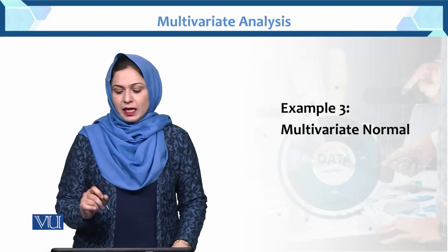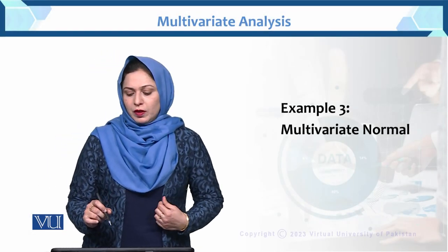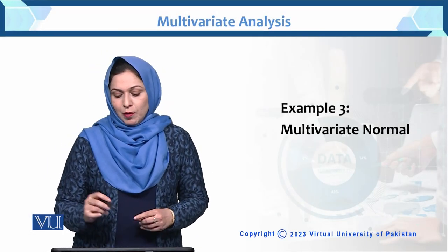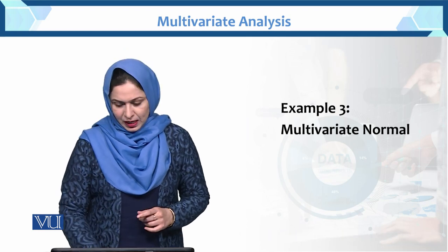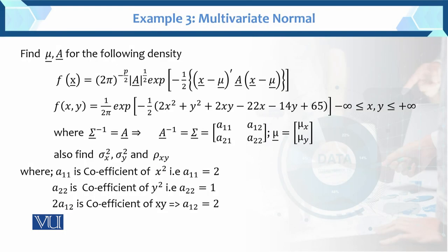This is an example of the multivariate normal, and it is also related to the previous example. We want to find the mean vector and variance-covariance matrix for the following density. This is the density function of the multivariate normal, f, which is equal to this expression.